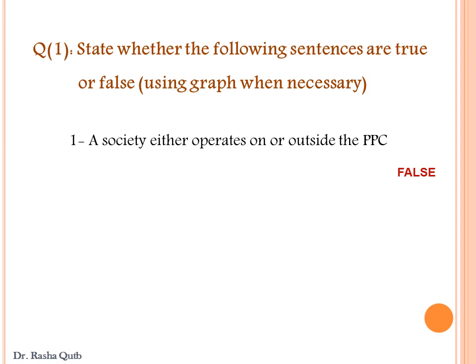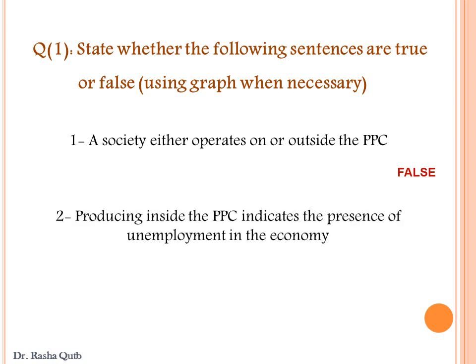Any point above the production possibility curve is not attainable. The economy does not have the ability to produce a combination of two goods located outside the production possibility curve. Second sentence: producing inside the production possibility curve indicates the presence of unemployment in the economy. This sentence is true, because any point located below the production possibility curve indicates that we have unemployment or a recession.